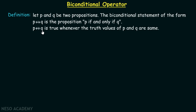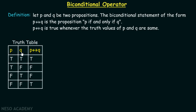P if and only if Q is true whenever the truth values of P and Q are the same. Looking at the truth table: when P is true and Q is true, we get the compound proposition true. And when P is false and Q is false, we also get the compound proposition true. Otherwise, the compound proposition is simply false.